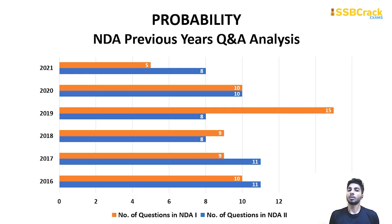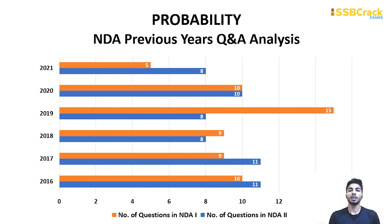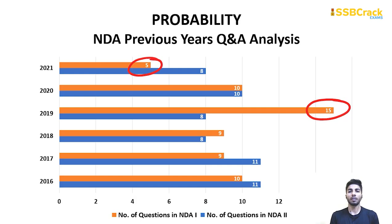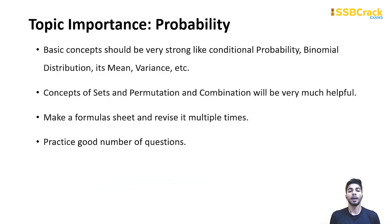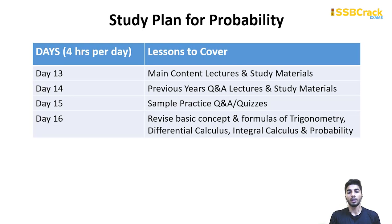Probability is a topic you've been studying since class 9 and 10 — classical probability — and in class 12 you cover binomial distribution. So you already know the basics. Maximum questions asked is 15 and minimum is 5. It is a simple, formula-based topic, so just practice a good number of questions. Cover it from day 13 to day 15.